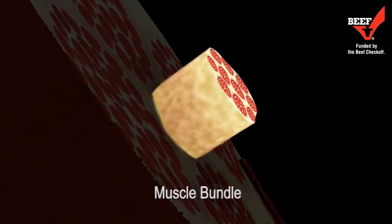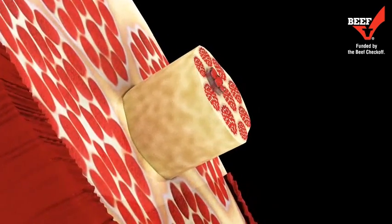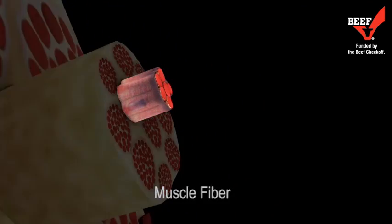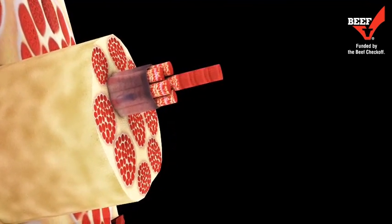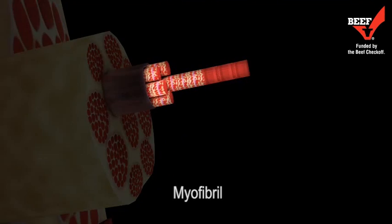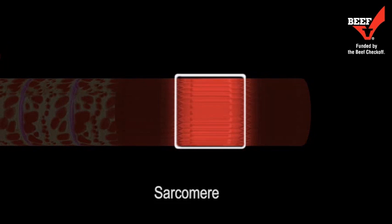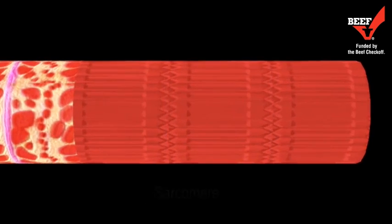Beef muscle is a matrix of muscle bundles consisting of muscle fibers and myofibrils. Muscle fibers are individual muscle cells that contain the myofilaments actin and myosin.